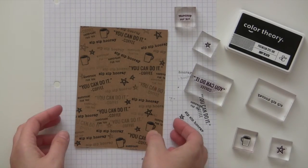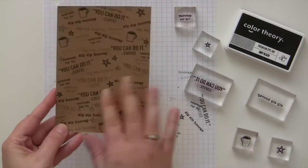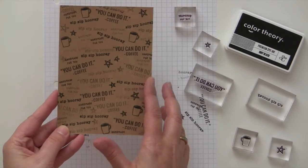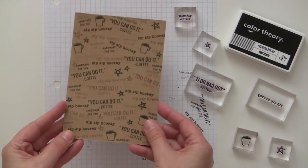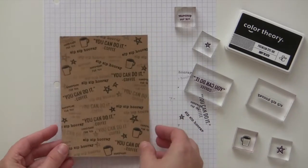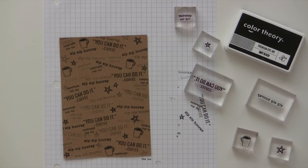I went ahead and finished stamping so you wouldn't have to watch. As you can see, it looks really cool with the different shades of gray, even though Inky Black ink is the only ink color that I used.